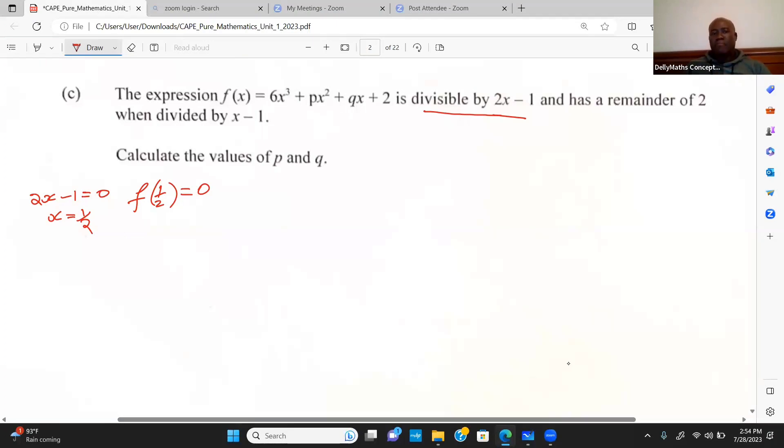The second idea is that when x - 1 was divided into the expression, we get a remainder of 2. If I should find what x is, you're seeing that x is equal to 1. In this case, if I should evaluate f of 1, I should get a remainder of 2. That's the premise on which we're going to base what we're doing now.